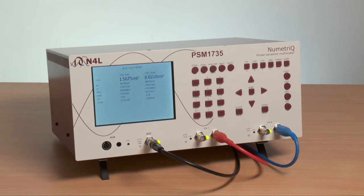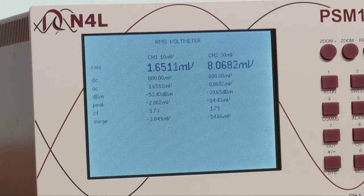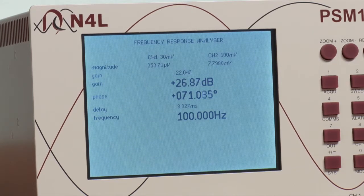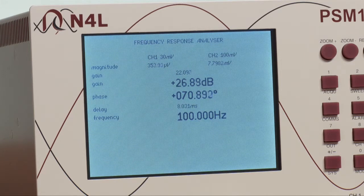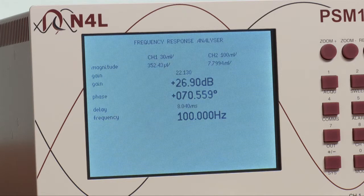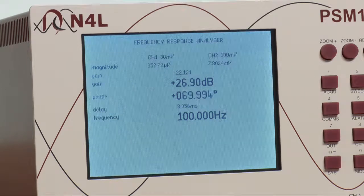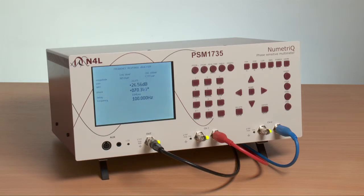If we now go to FRA mode, we can see that we have gain of 26 dB with 71 degrees phase angle at the injected frequency, which happens to be 100 Hz. This injection frequency can be changed during a sweep. But what we want to illustrate is that the gain phase plot is dependent not only on the frequency and injection signal level, but also the load of the power supply.